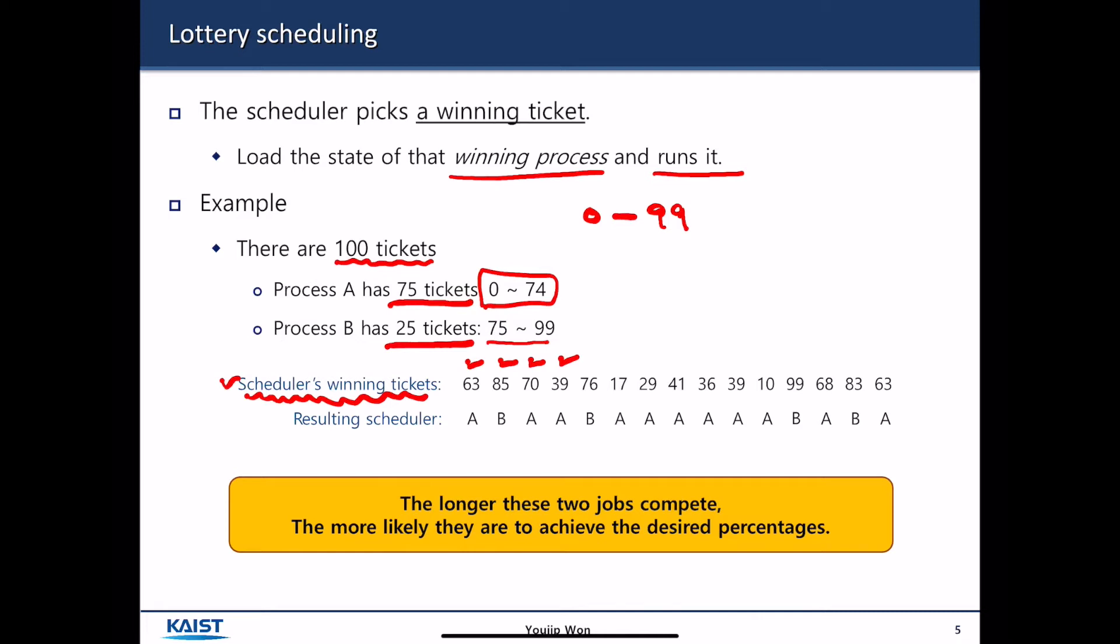So, in this case, the process picks 63, which is less than 75, so CPU is allocated to process A. Here, CPU picks up 85. It is greater than 75, so CPU is allocated to process B.